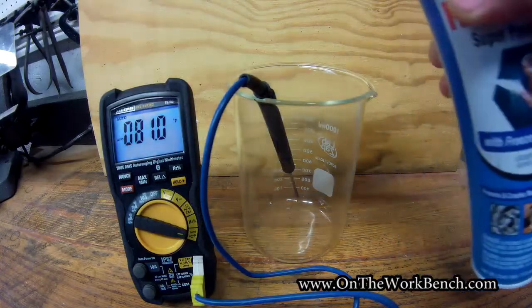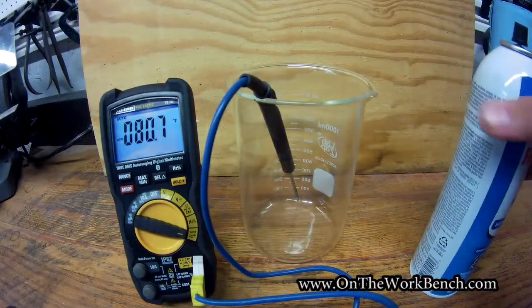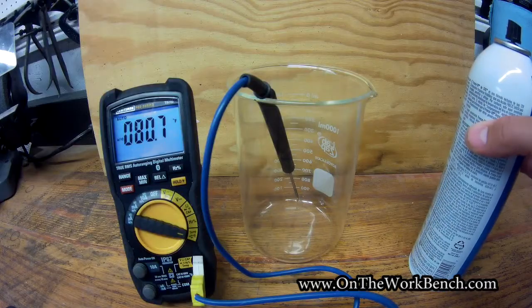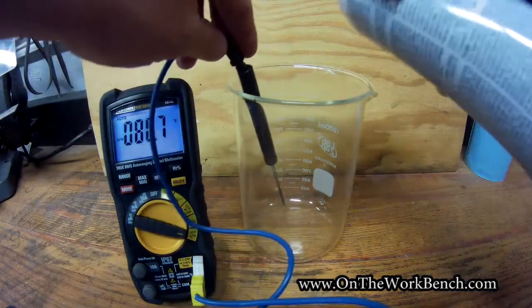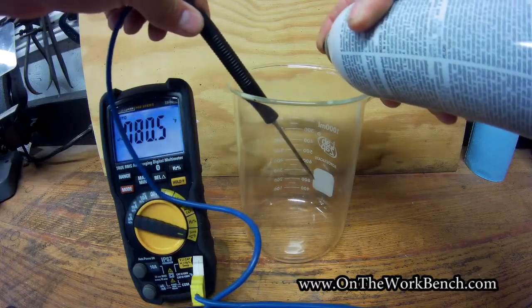Now I'm going to take the can of freeze-off and I'm going to see how cold this gets the temperature probe. We're at 80.7, so now I'm just going to simply spray the probe and we'll see how it goes.